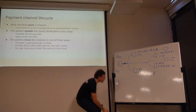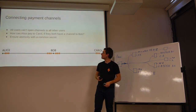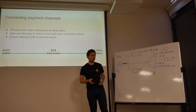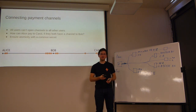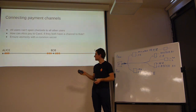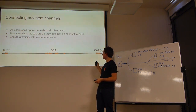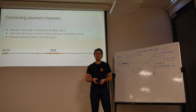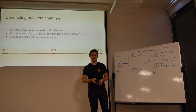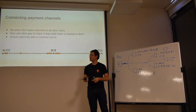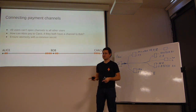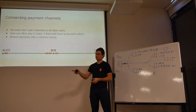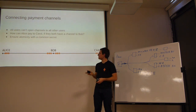The interesting part is multi-hop payments. Users cannot connect to all other users at scale, so the ideal scenario is when people can use paths of channels to route payments — Alice pays Carol via Bob, rebalancing the channels along the way. The key requirement here is atomicity: either both channels update or none of them update. The scenario where Bob can run away with the money is very bad, and equally the scenario where Carol pulls money from Bob but Bob cannot pull from Alice is also very bad. We ensure atomicity with a common secret.